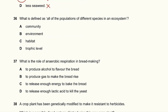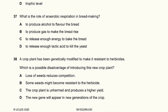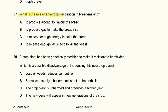Question 36: What is defined as all the populations of different species in an ecosystem? All the different populations of different species in an ecosystem is referred to as a community. So A is the answer.